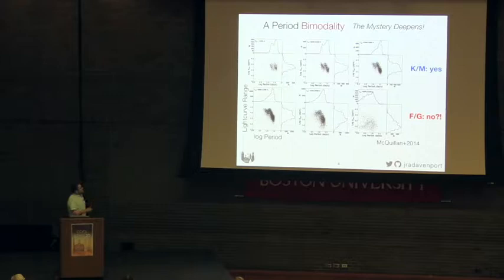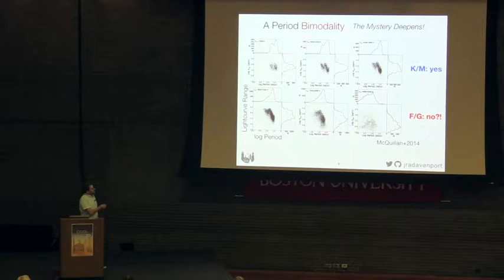The mystery deepened a little bit when they extended the sample to all of the Kepler sources, and that this bimodality, you can see it in these clumps here, of range of the light curve versus period. You can see it for the M dwarfs, you can sort of see it for the K dwarfs, but by the time you get to the G dwarfs and the F stars, there's no evidence of a bimodality. This is an interesting mystery.